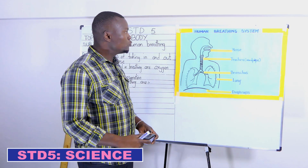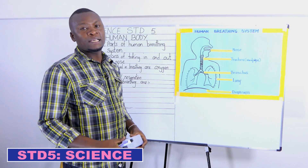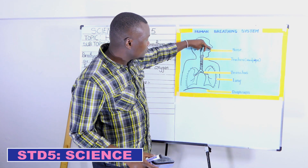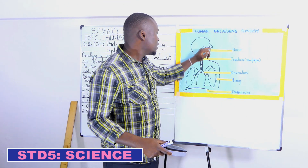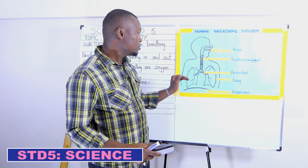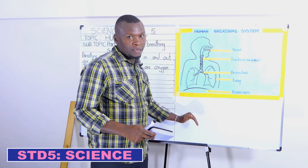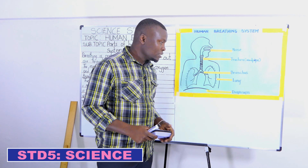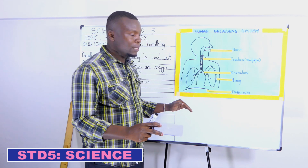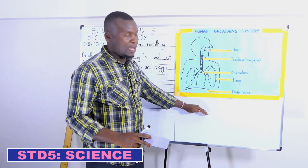I have indicated on this diagram for you to understand better the parts of the breathing system at Standard 5 that you need to understand as a learner. As you are doing your revision, you must understand that these are the nose, as indicated on this diagram. We have the windpipe connecting the nose to the lungs through the trachea, then the lungs, which have their specific function, and the diaphragm that separates the thorax and the abdomen and also assists in breathing in and out. The diaphragm is a muscle-like structure separating the thorax and the abdomen at the chest level.